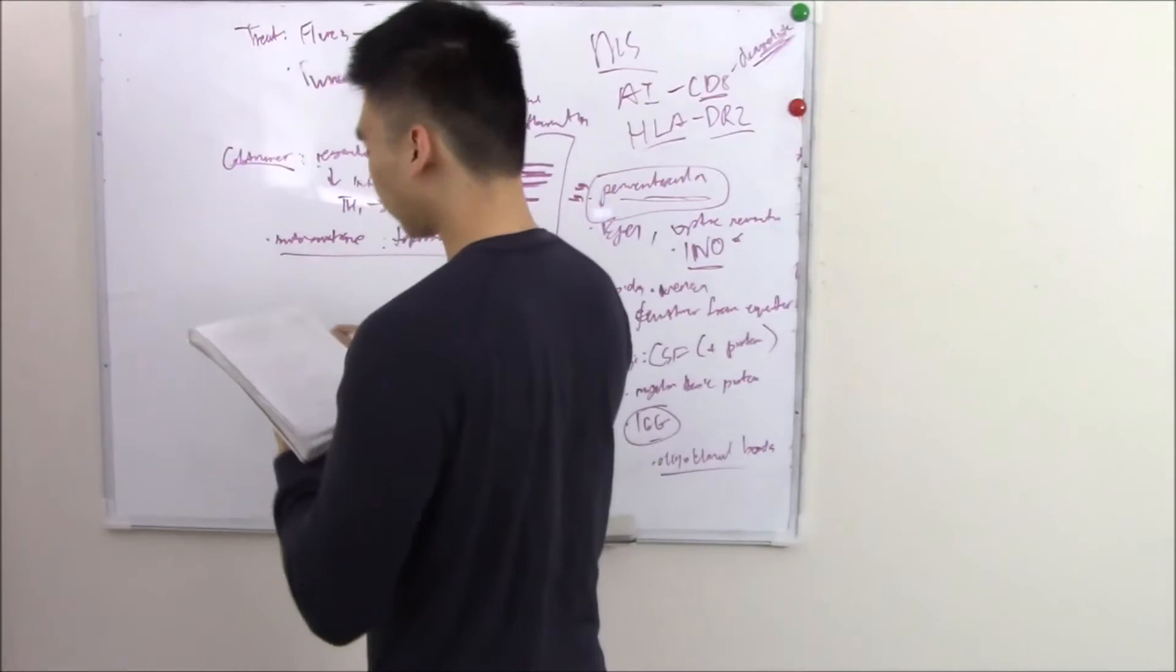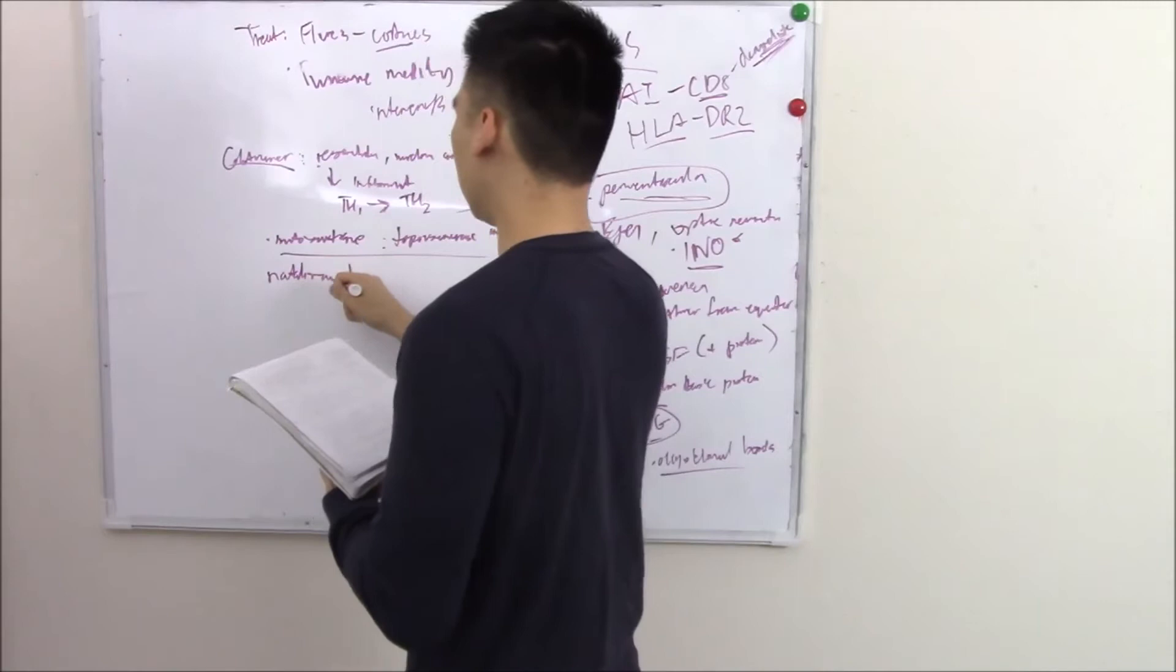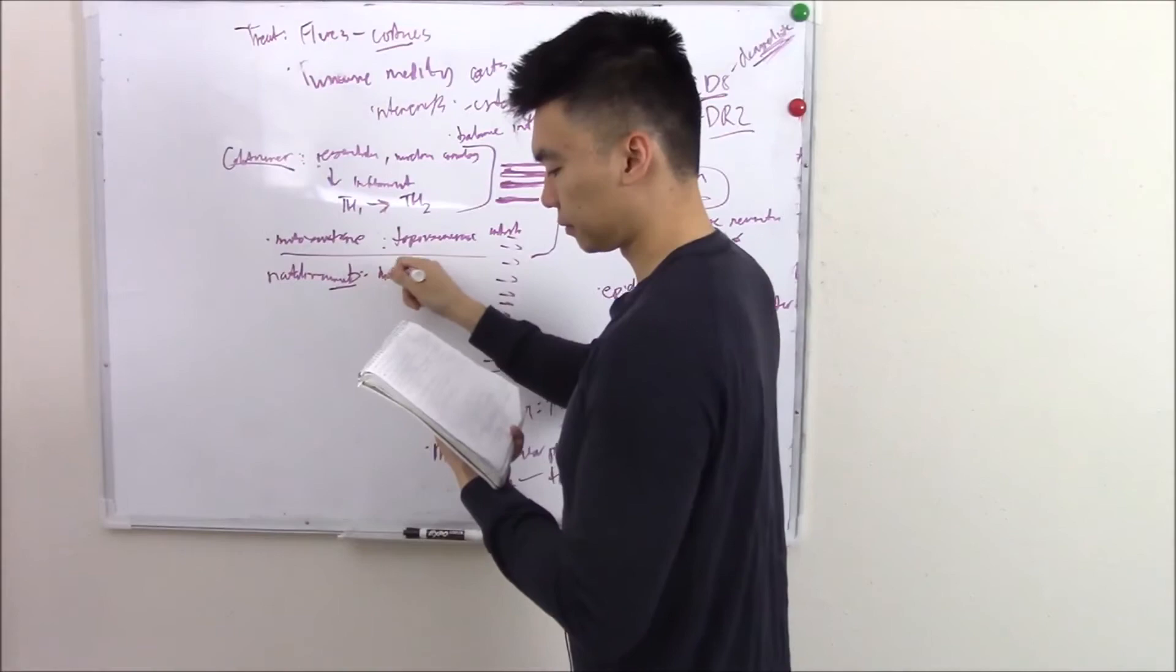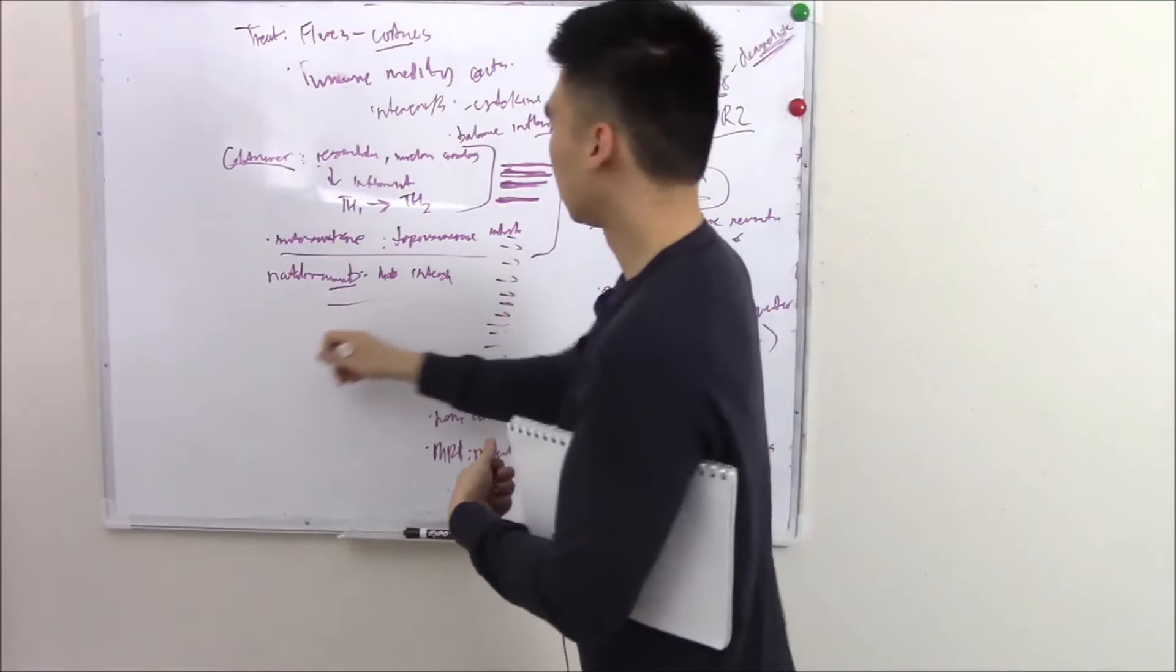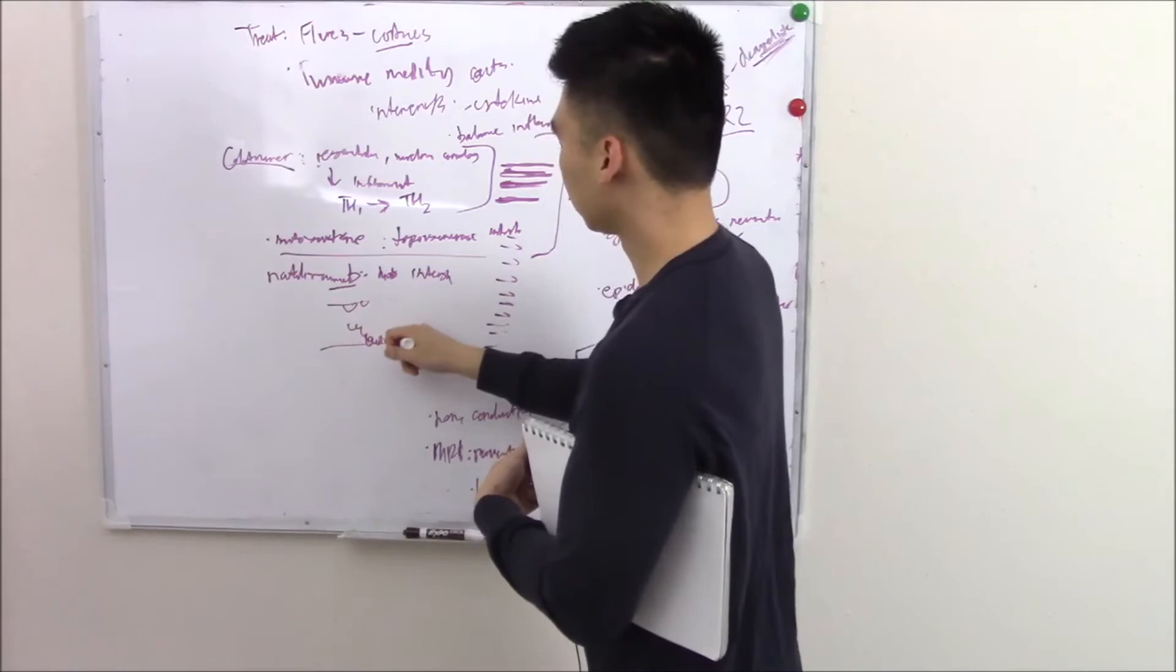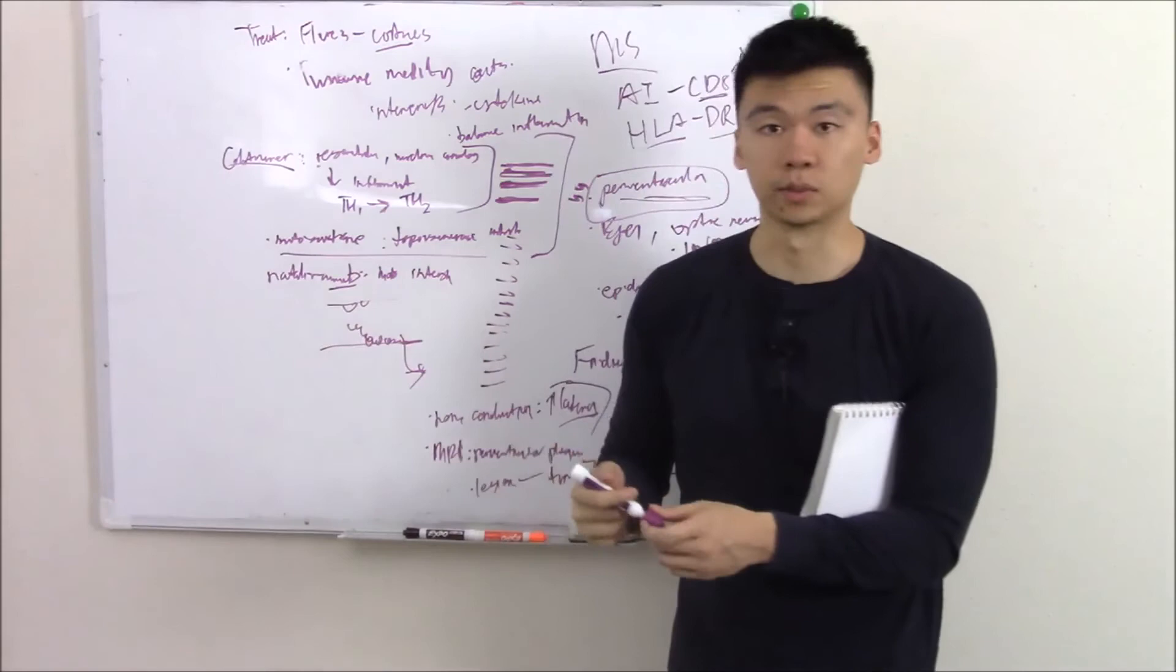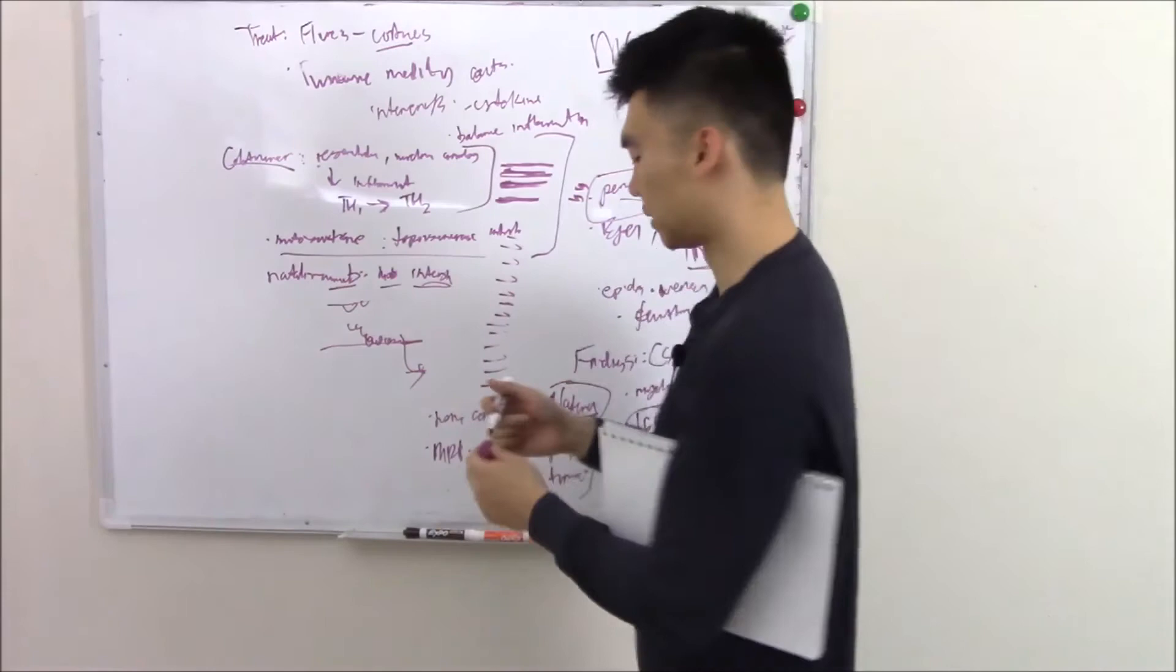You can have natalizumab. This is a monoclonal antibody against integrin. Integrin is a molecule on your leukocytes that helps it adhere to your blood vessels. You recall your neutrophils will slow down, roll, attach to your membrane, and then exit out into the site of inflammation. If you have monoclonal antibodies against integrin, against adhesion molecules, then it can't adhere and it can't leave. So you reduce that inflammation.